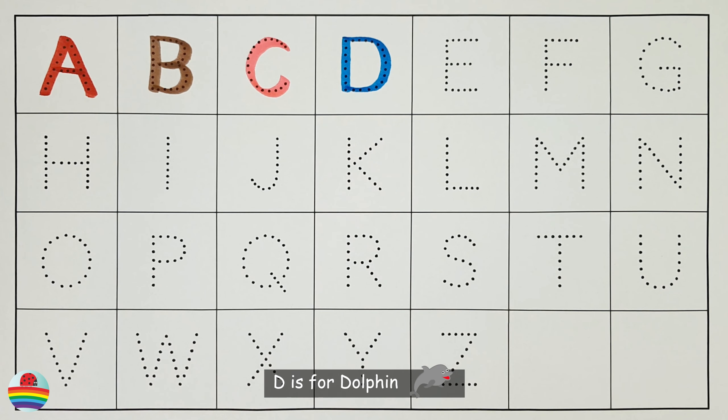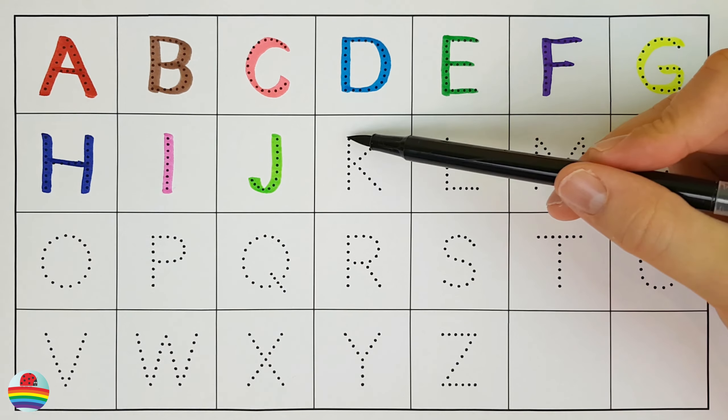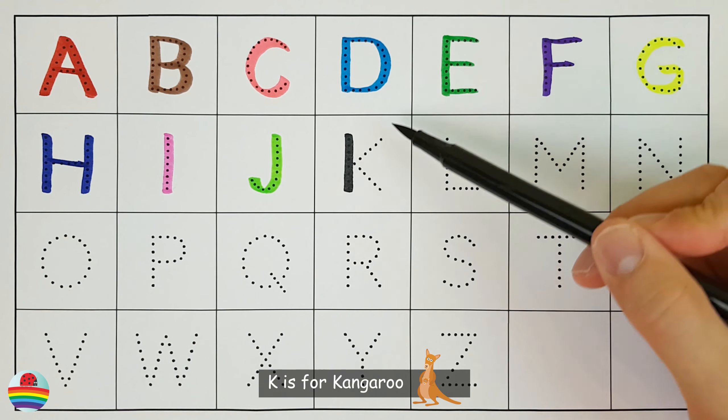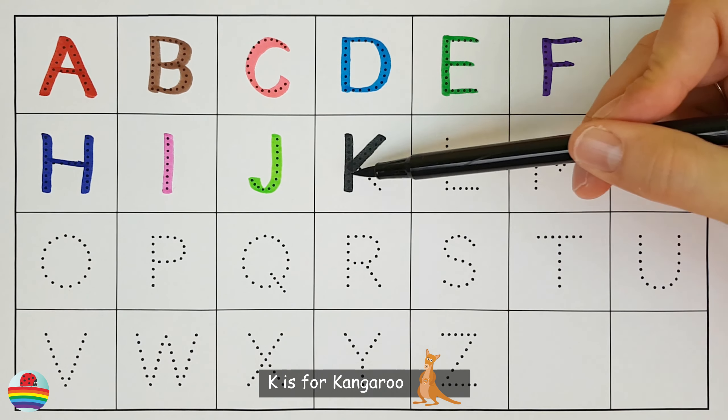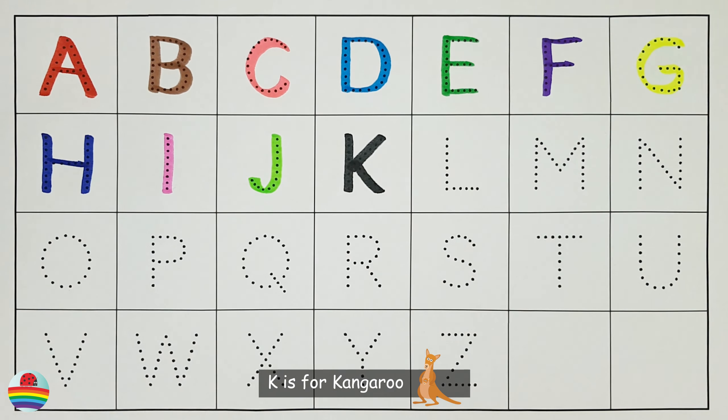G is for grasshopper. H is for hippopotamus. I is for iguana.